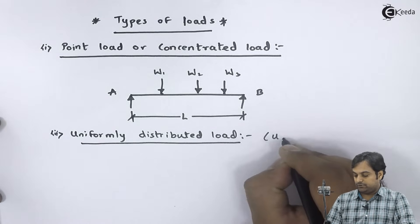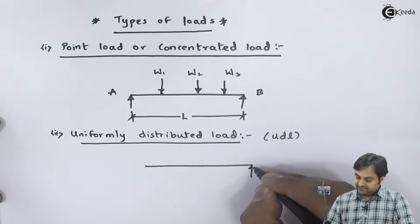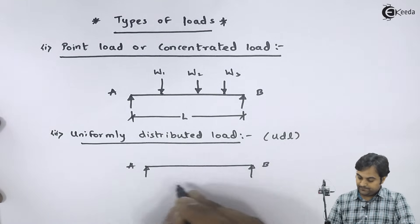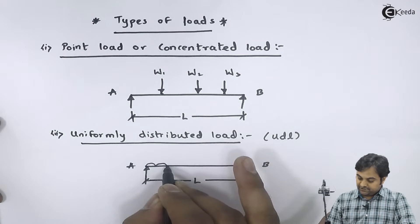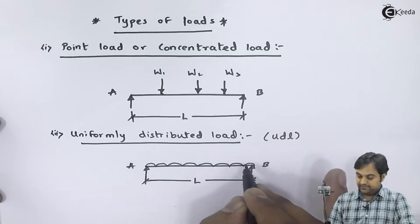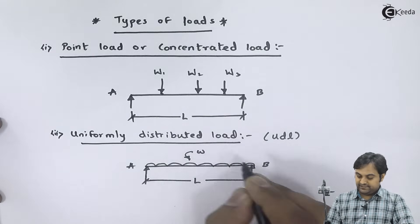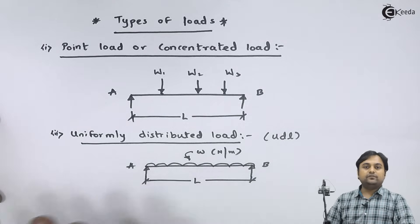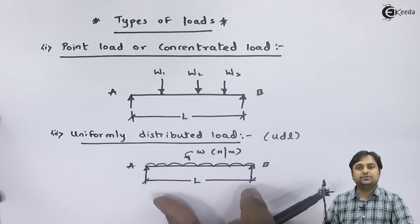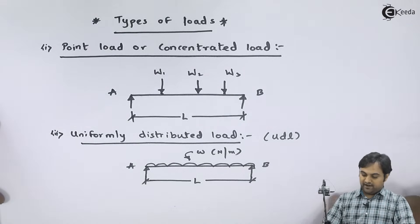Next is uniformly distributed load, also denoted as UDL. If I have a simply supported beam AB having length L, the uniformly distributed load acts throughout the length of the beam. It is not acting at one particular point like a concentrated load; it is there throughout the beam and its intensity is given as w in newton per meter. We never use UDL in problems as it is — we convert UDL into a point load. Once we are in the problems, I would explain how to convert UDL into a point load.